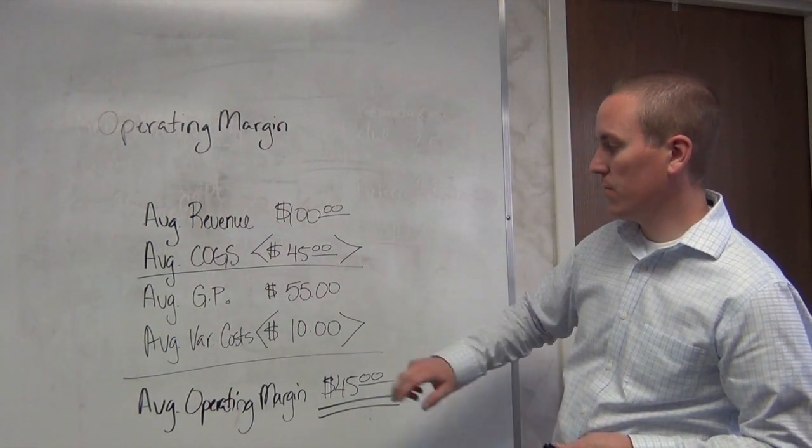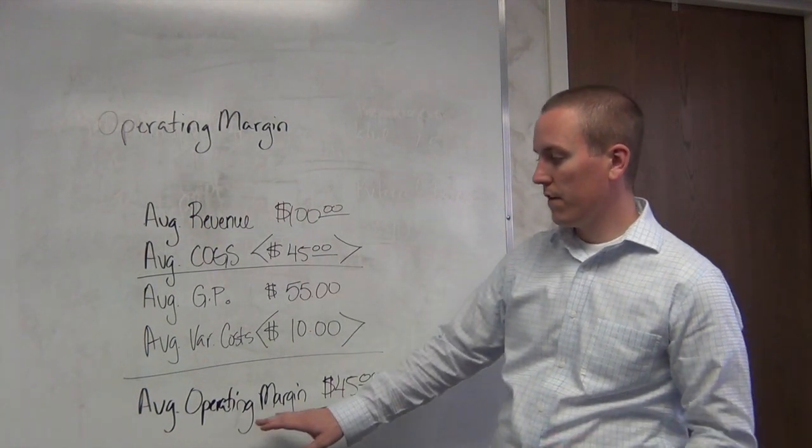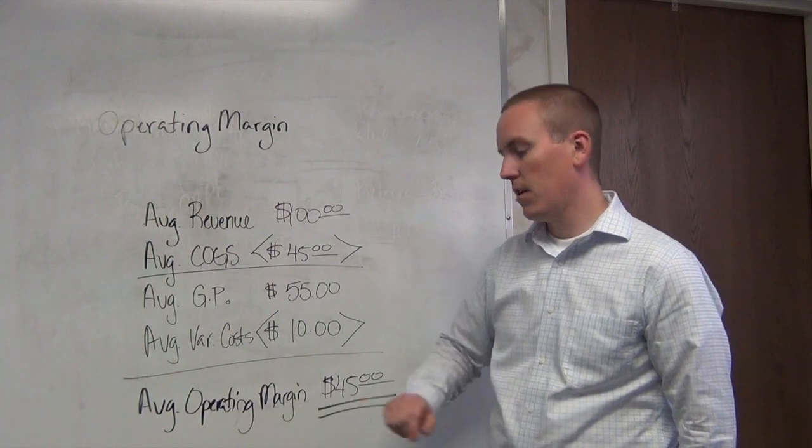So you take the $10 from the $55, that leaves you with $45. $45 is your average operating margin.